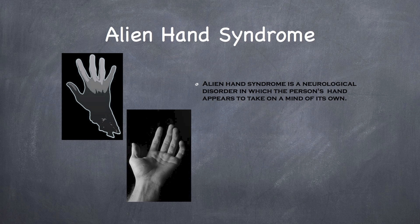Alien Hand Syndrome is a disorder with a central nervous system in which the hand appears to take on a mind of its own. The hand appears to be outside voluntary control.